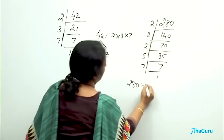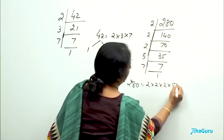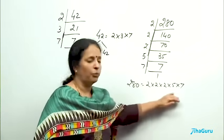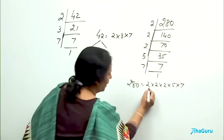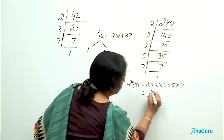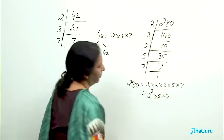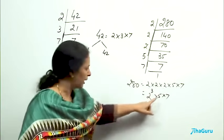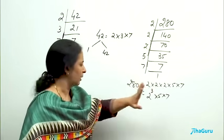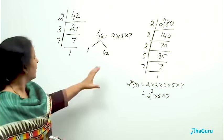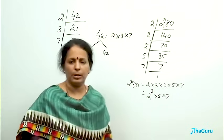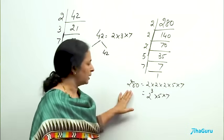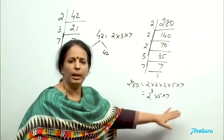So 280 can be written as 2 into 2 into 2 into 5 into 7. This is a composite number written as the product of many prime numbers or even their powers. For example, I am using 2 three times, so I can write it as 2 to the power 3 into 5 into 7. Here I have written 42 as 2 into 3 into 7, all are coming only once. Here 2 came 3 times, so I wrote 2 to the power 3 into 5 into 7. So the thing that we are seeing here is any composite number, you can take any composite number, continuously divided by prime number, you can write a composite number as the product of many prime numbers.